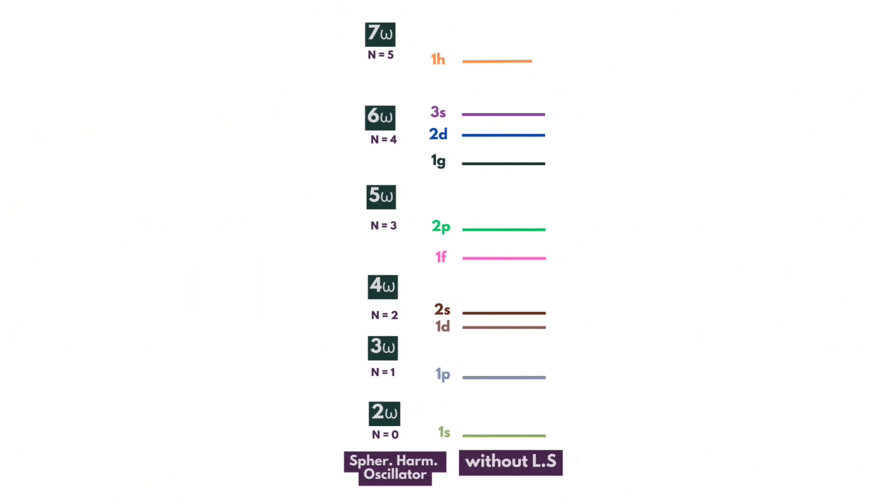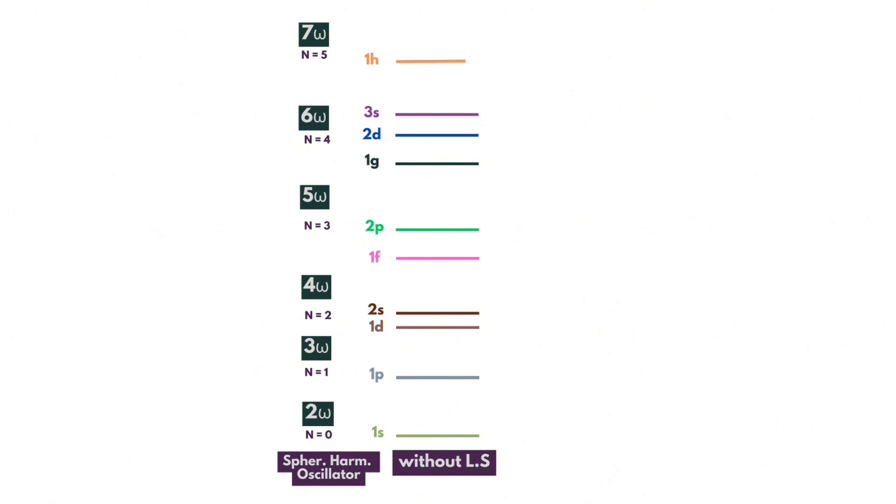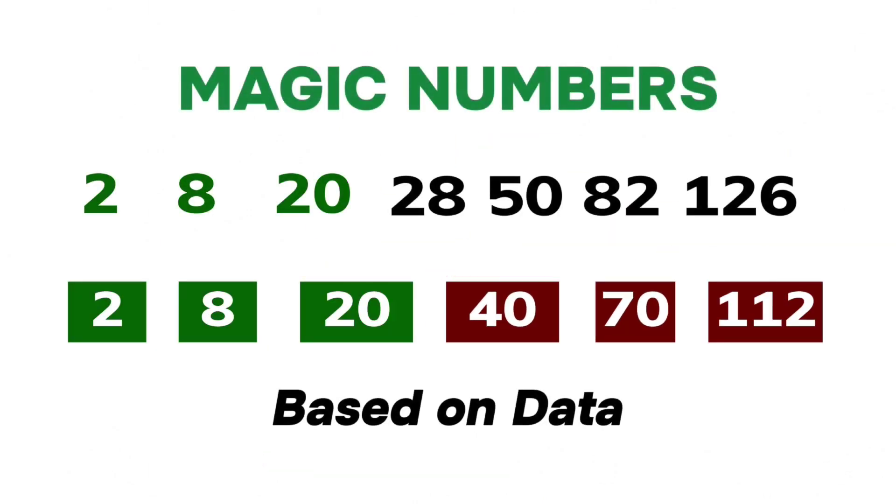Based on the quanta per orbit, the magic numbers appear different. It becomes 2, 8, 20, 40, 70, and 112. As you can see, the first three magics are in agreement, but the consecutive hires are not. How did this happen?